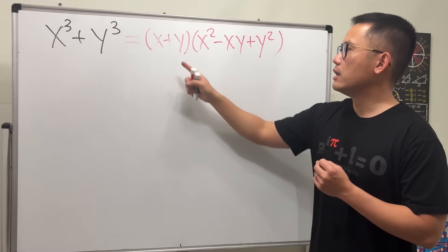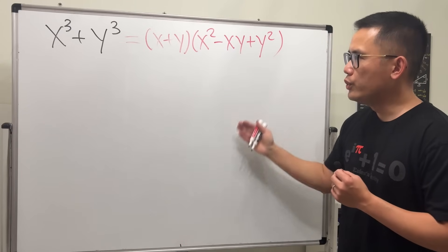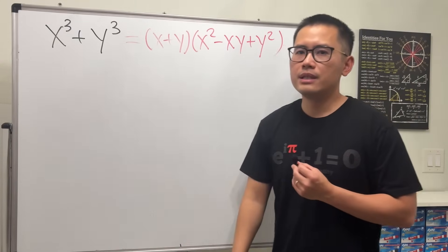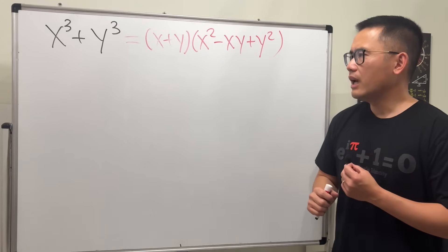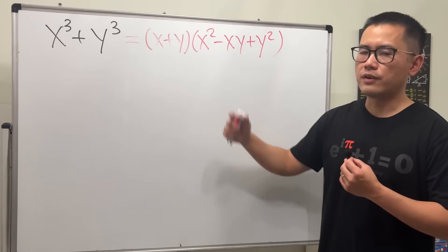I can also tell you guys that, start from here, multiply it out, work it out, you will end up with x cubed plus y cubed. Yes, that will work, but it's like missing something. Because it's kind of like, how did I know the answer in the first place, right?